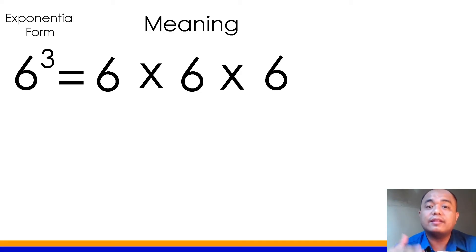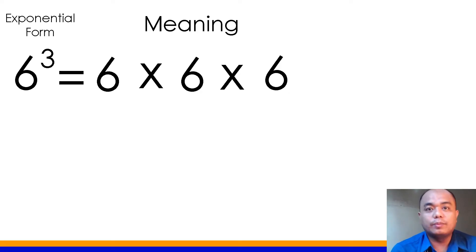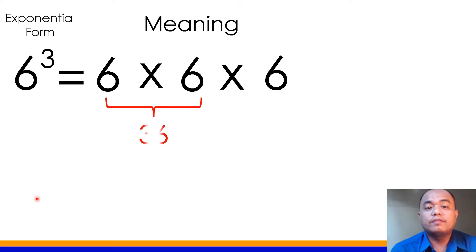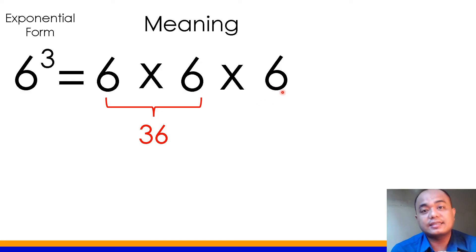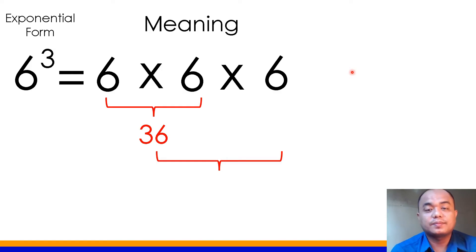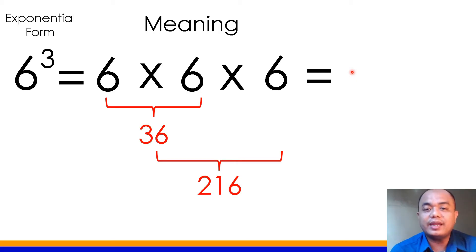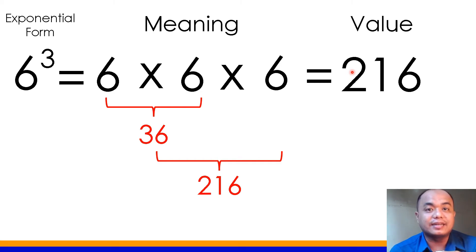Now, if you want to get the value of 6 cubed, we will multiply each number. Let's start with the first two 6s: 6 times 6 is how much? 36. Next, we will multiply the first product by the remaining 6. So 36 times 6 is how much? The answer is 216. So the value of 6 cubed is 216.